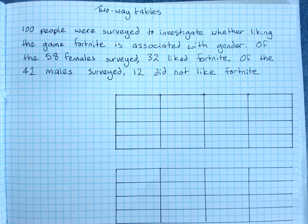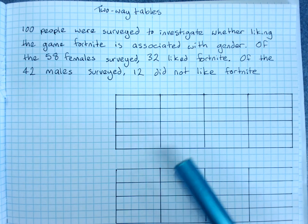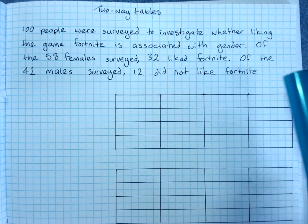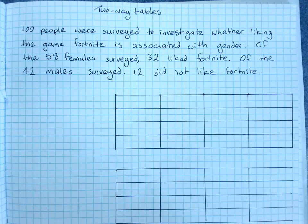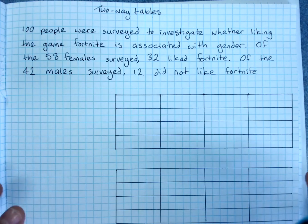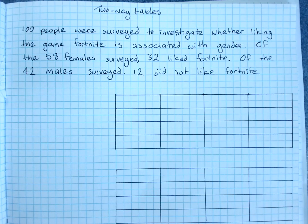Two-way tables. Two-way tables are used to present data and to help us describe associations between categorical variables. You'll remember from earlier years that categorical data is categories, non-numerical data, like saying whether you're male or female. In this example, whether you like or don't like Fortnite. Since we can't do some of the maths, we can still look at an association with a two-way table and percentages.